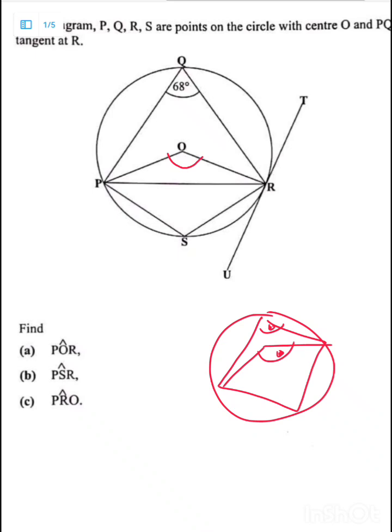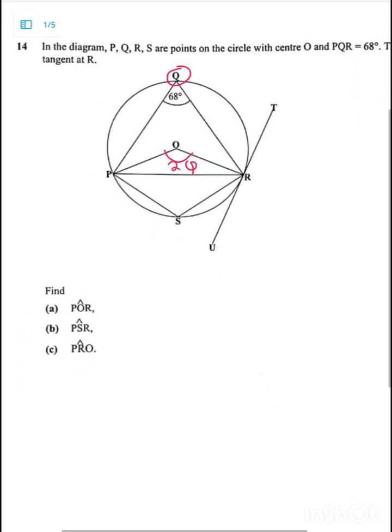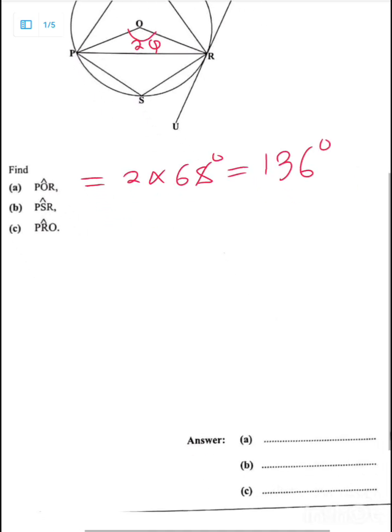This angle here is twice that angle there. That's what I'm trying to say. So now, look at this. If this angle here is twice this angle Q here, so that we are saying that is 2Q. What is angle Q? So angle Q is just 68. So we are saying this one is just equal to twice angle 68.